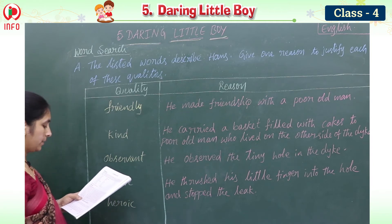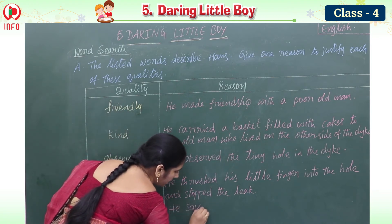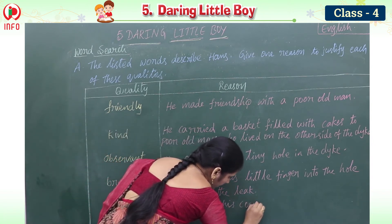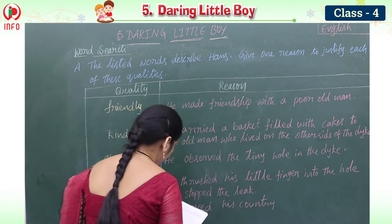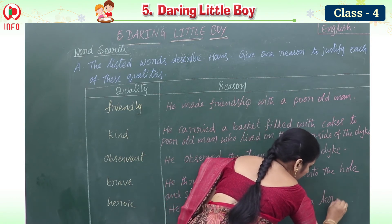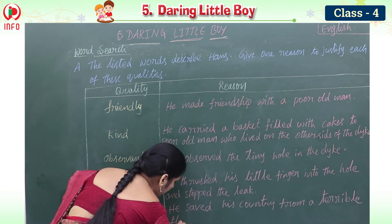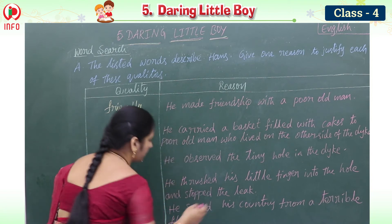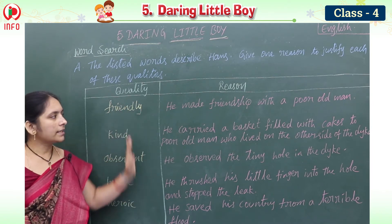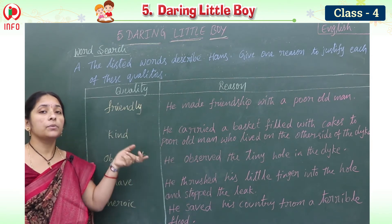For heroic: he saved his country from a terrible flood. With this action we can say he is heroic. So for each of these words — friendly, kind, observant, brave, heroic — we should write supporting sentences to justify each quality as suitable to his character.